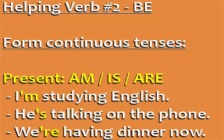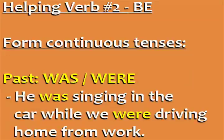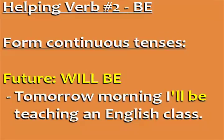Helping verb number two: be. Use 'be' to form continuous tenses with the -ing form of the verb. In the present continuous, 'be' takes the form of am, is, and are. For example: I'm studying English, he's talking on the phone, we're having dinner now. In the past it takes the form of was and were: he was singing in the car while we were driving home from work. In the future continuous it takes the form of will be: tomorrow morning I'll be teaching an English class.